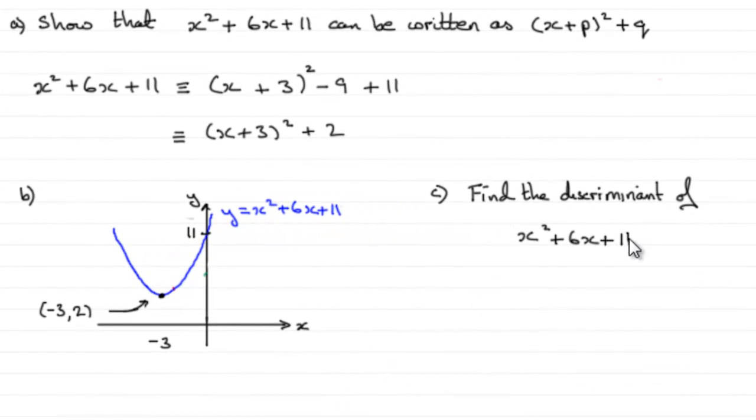Now, for the last part here, we're asked to find the discriminant of x squared plus 6x plus 11.